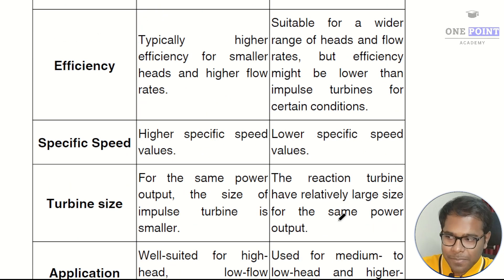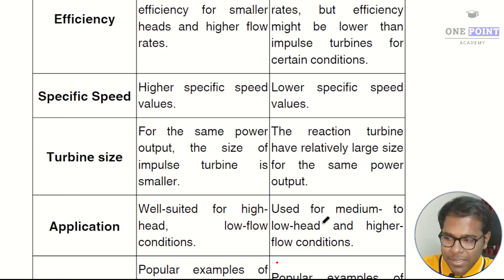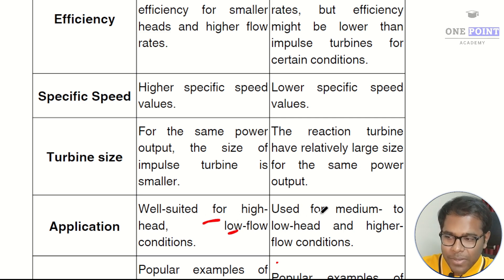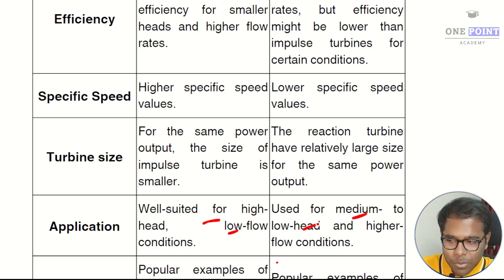The next difference is with respect to application. An impulse turbine is well suited for high-head and low-flow conditions, whereas a reaction turbine is well suited for medium to low head and higher flow condition applications.